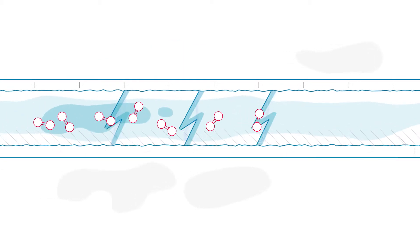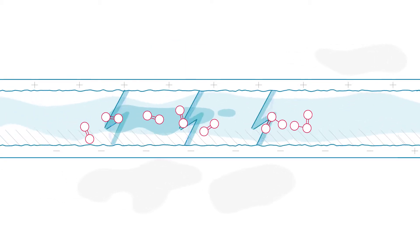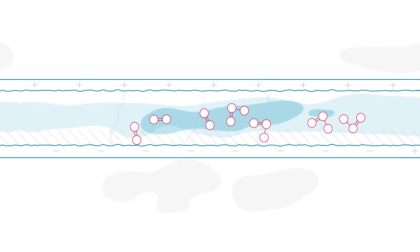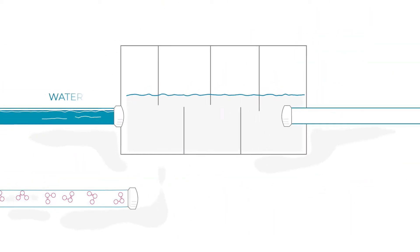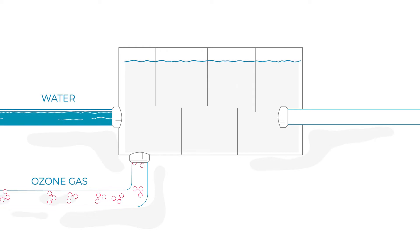First, ozone gas is generated by passing high purity oxygen through an electric field. In water applications, the ozone gas must be quickly and efficiently transferred into water before decomposing back into oxygen.